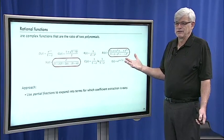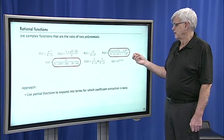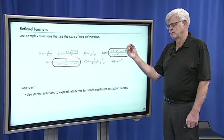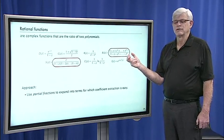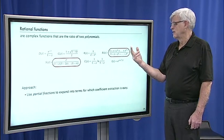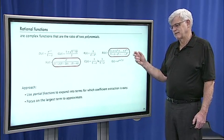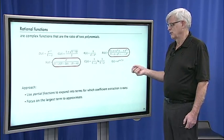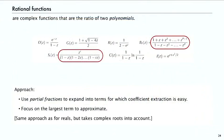The approach is simple and actually familiar — we're going to do just what we do with real functions. When we encounter a ratio of two polynomials with real functions, we use partial fractions to break it up into simpler terms where it's easy to get the coefficients out. When we've broken it into a number of terms, we're going to focus on the largest term to get the approximation. The difference is that we might get complex roots of the polynomials, and we'll see that in examples.